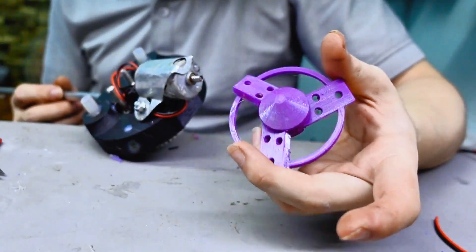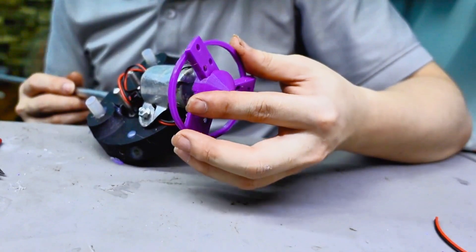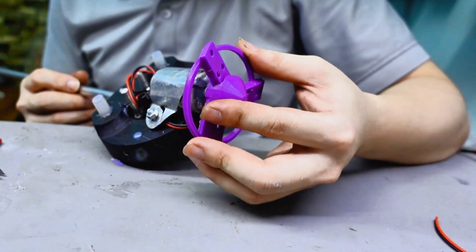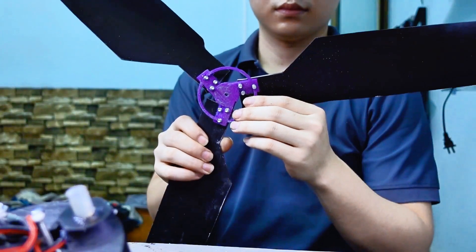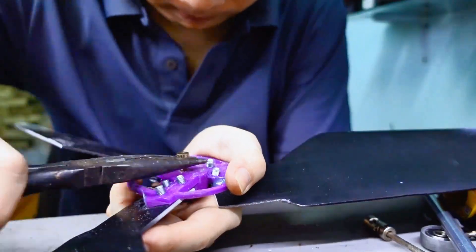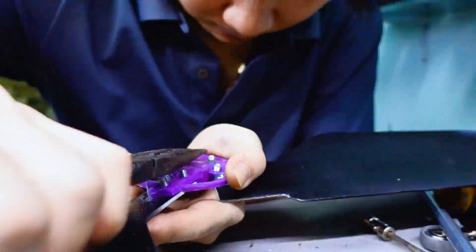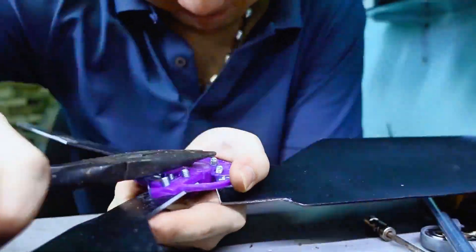After that, I'll move on to installing the shaft that holds the three blades. Look at this, it's super sturdy. I'll also use a brass rod to make the blades even more solid and add a gear to increase the speed. This helps the motor spin faster and generate more electricity.